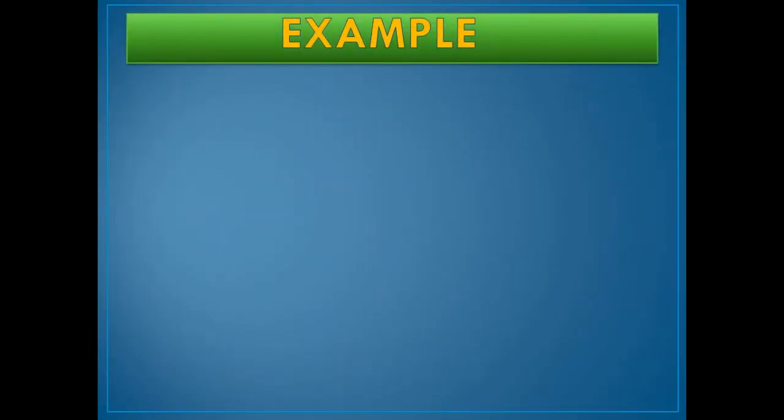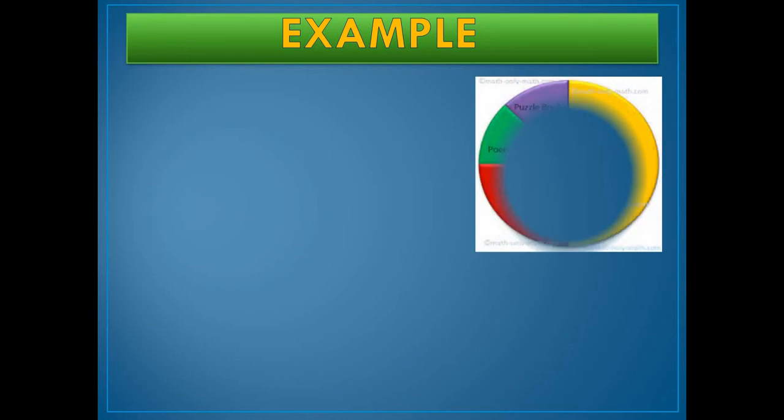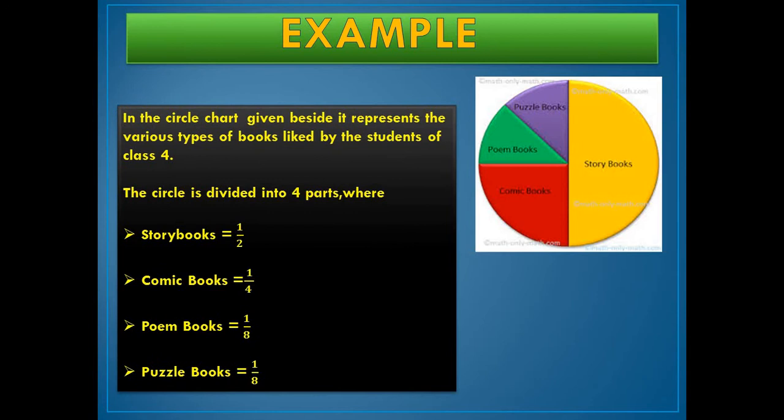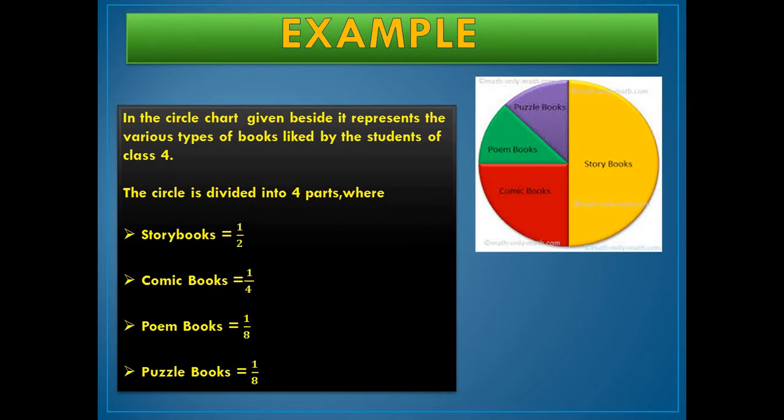Let's see an example. In the circular chart given beside, it represents the various types of books liked by the students of class four. So, the circular chart is divided into four parts, one, two, three, and four.